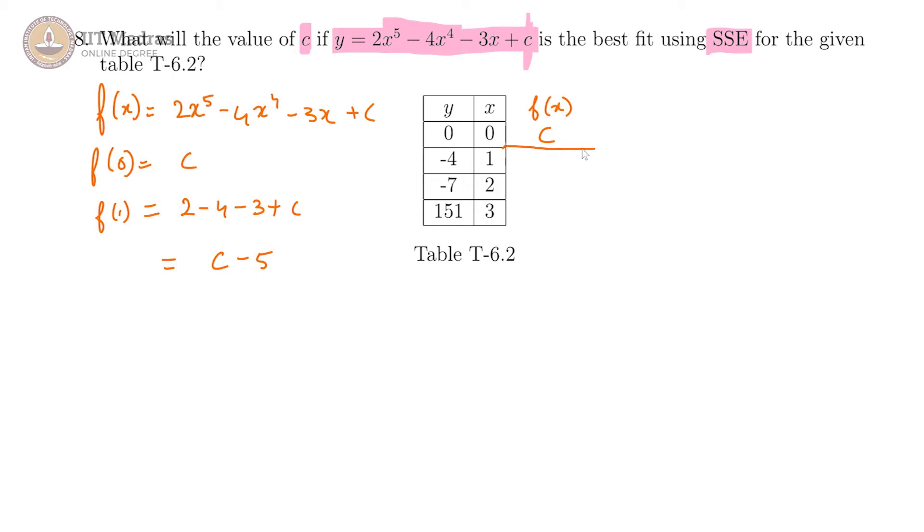Here this is c minus 5, and then f of 2 is 2 into 32 minus 4 into 16 minus 6 plus c. Now, 2 into 32 is 64, 4 into 16 is 64, so these two cancel off so you get c minus 6.